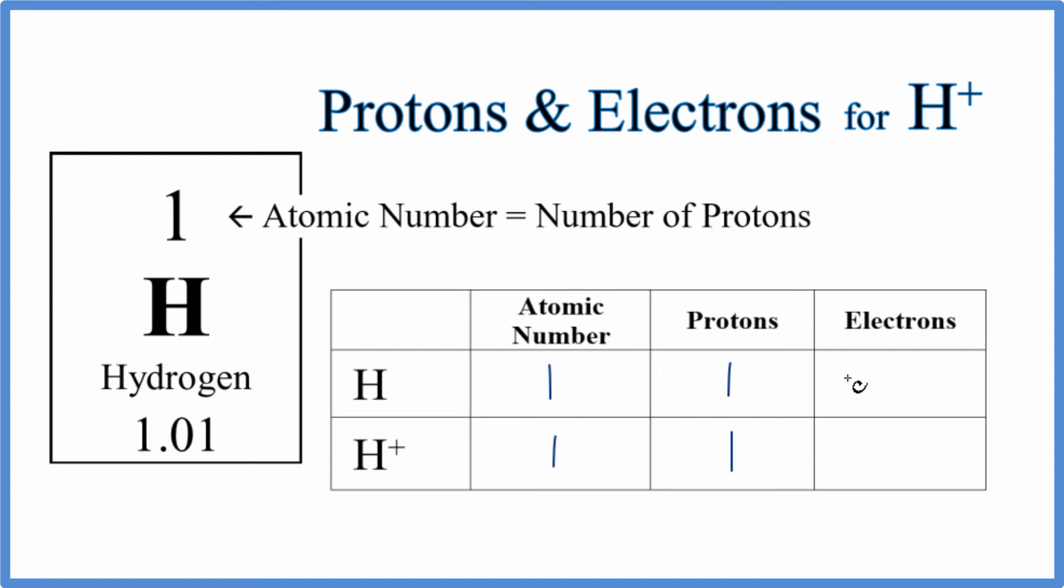Electrons though, that's going to be different. When we have a neutral element like hydrogen on the periodic table, the number of protons and the number of electrons is the same. So we have one proton, one electron. That makes sense. This is positive, this is negative, they cancel out.